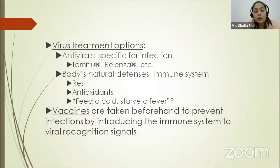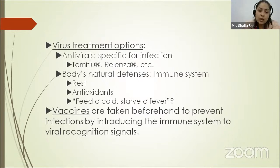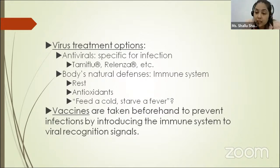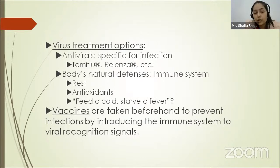For the treatment of viruses, we can use antivirals specific for the infection — examples include Tamiflu and Relenza. We can also rely on the body's natural defense immune system, such as rest. Antioxidants like zinc are considered a potential supportive treatment against COVID-19 infection due to their antioxidant properties. Vaccines are taken beforehand to prevent infections by introducing the immune system to viral recognition signals.